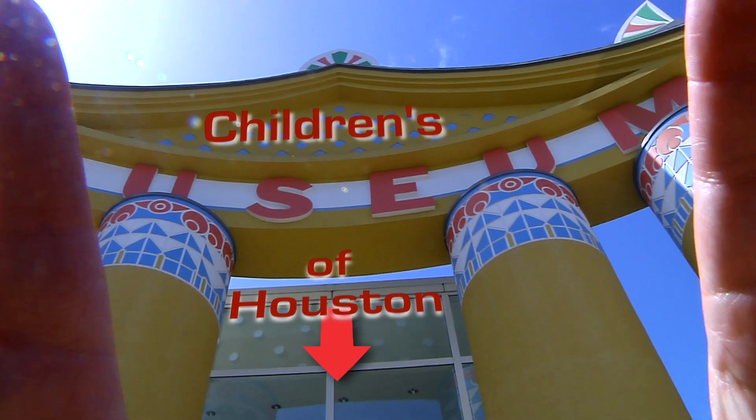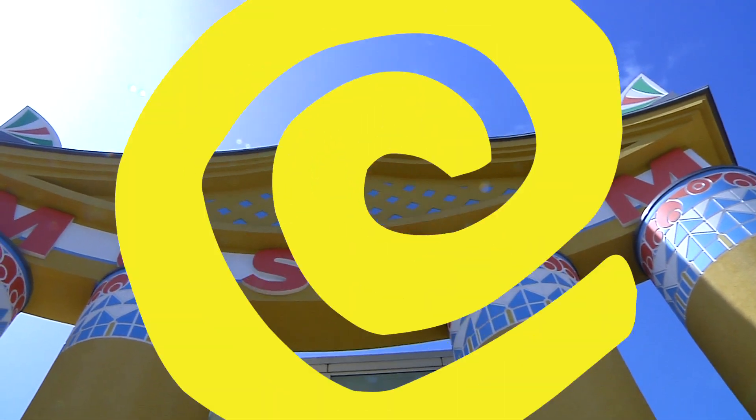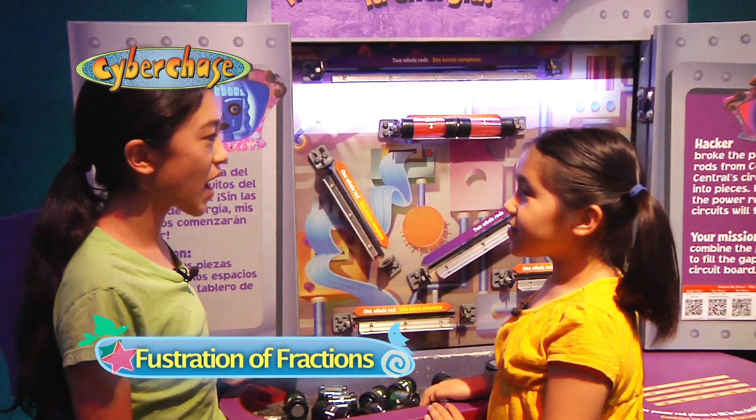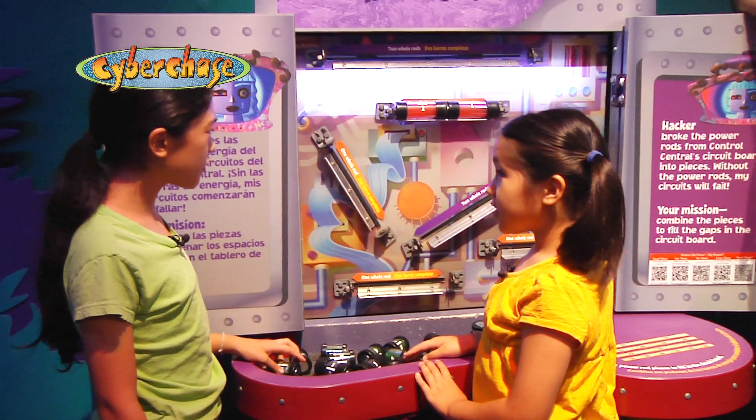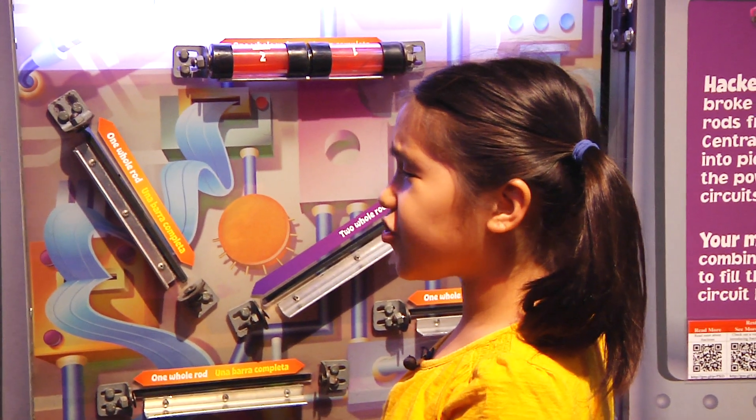Hey, hey, I'm Mr. O, here with another moment at the Children's Museum of Houston. Well, that one was easy because two halves fill the gap. But now we only have thirds and fours. How do thirds and fours come together to make a whole?